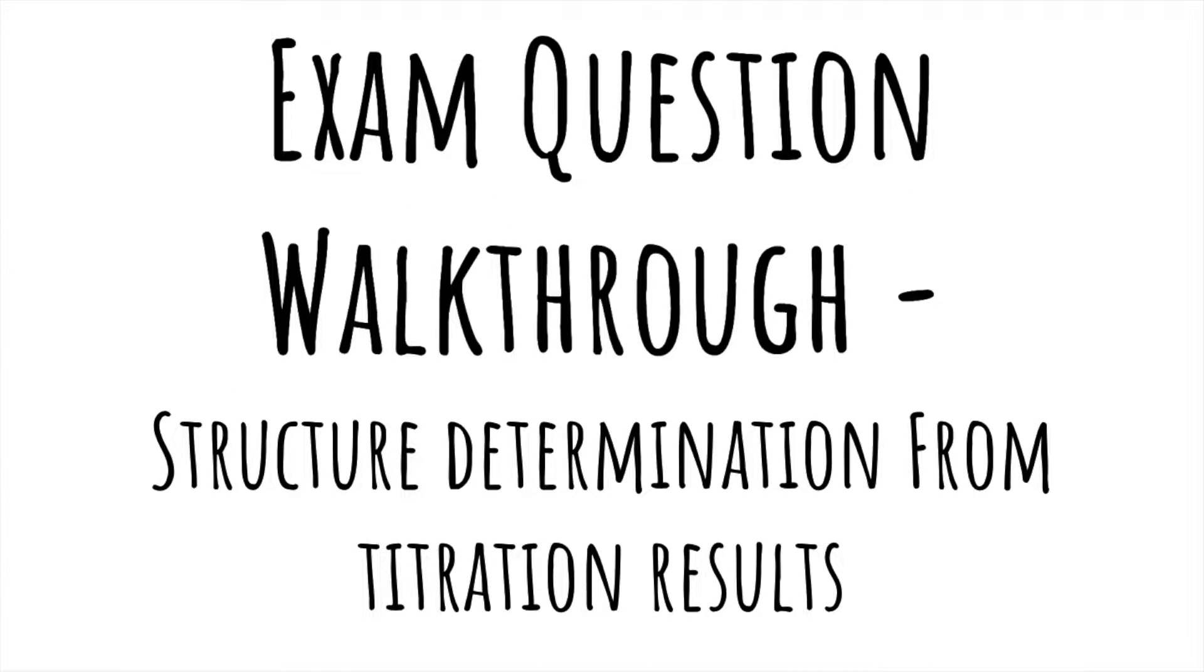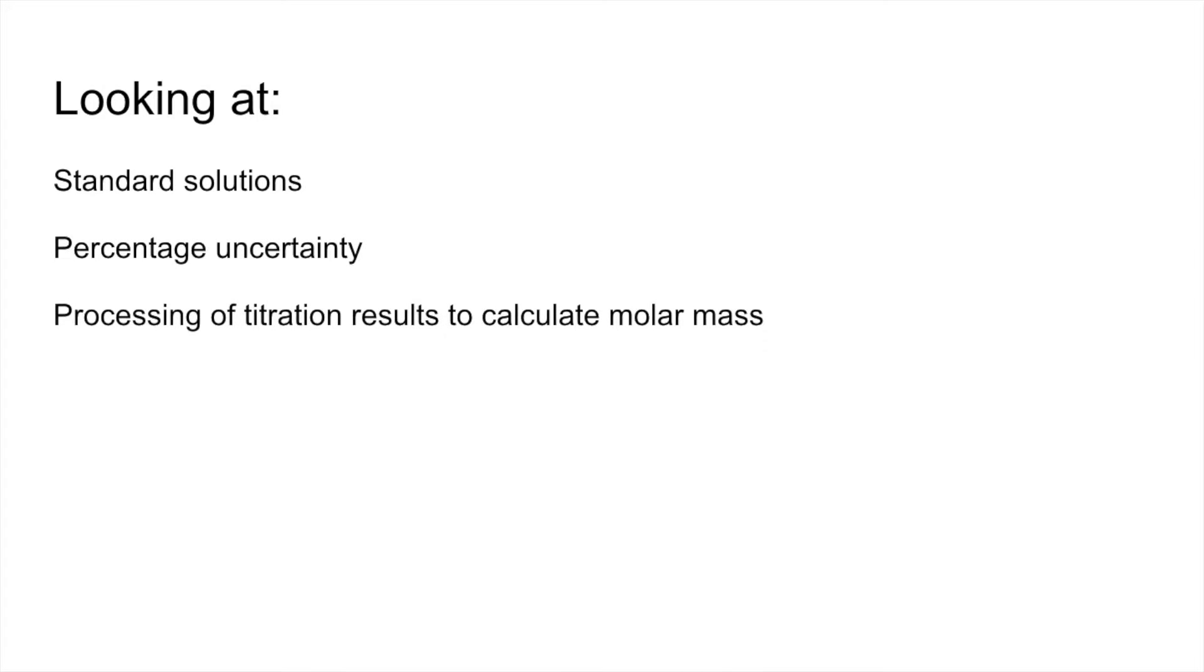I've got an exam question walkthrough here which deals with structure determination from titration results. The question looks at standard solutions, percentage uncertainty, the processing of titration results to calculate the molar mass, and then using the molar mass to determine a structure for an organic acid.